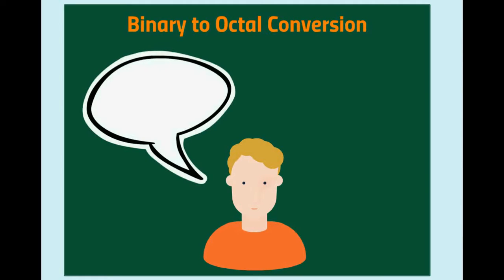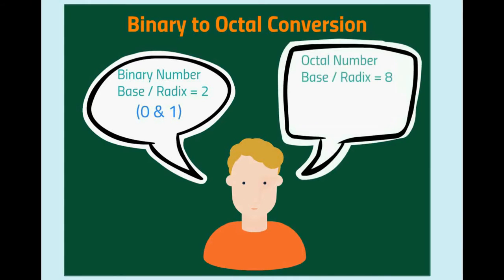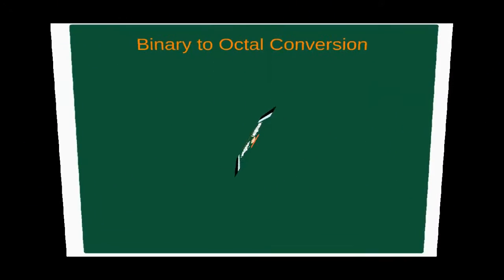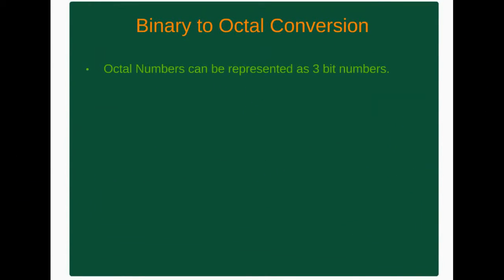In binary number, base or radix is 2 and it contains only two numbers: 0 and 1. For octal number, base or radix is 8 and it contains 8 numbers: 0, 1, 2, 3, 4, 5, 6 and 7. Octal numbers can be represented as 3-bit numbers.